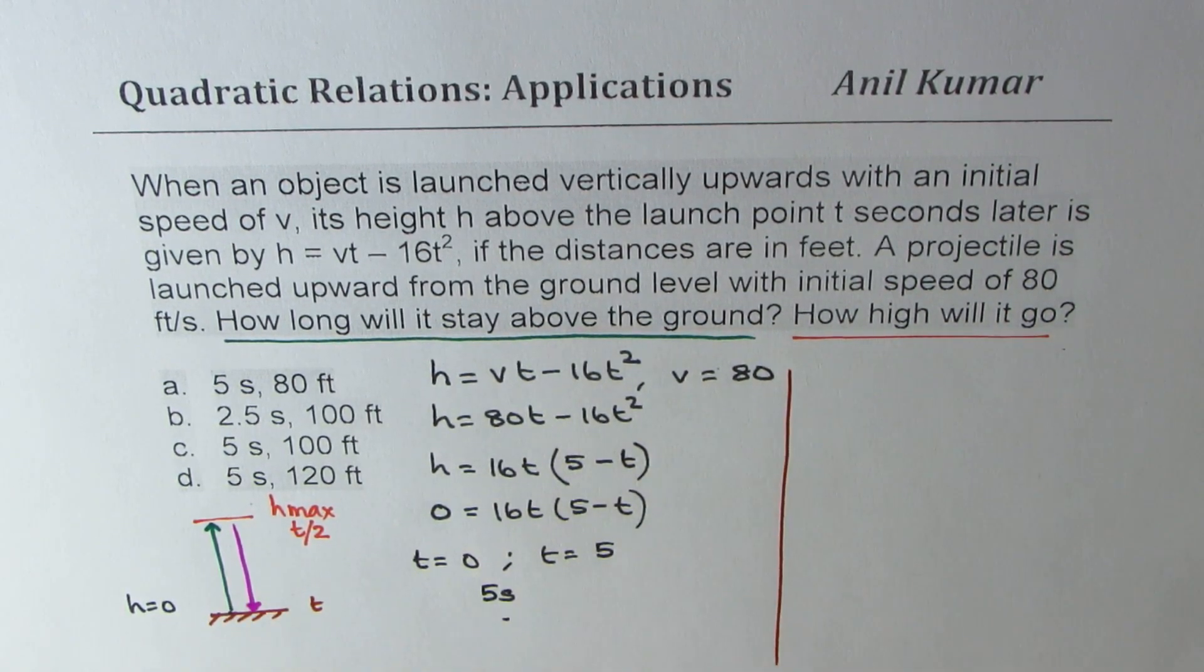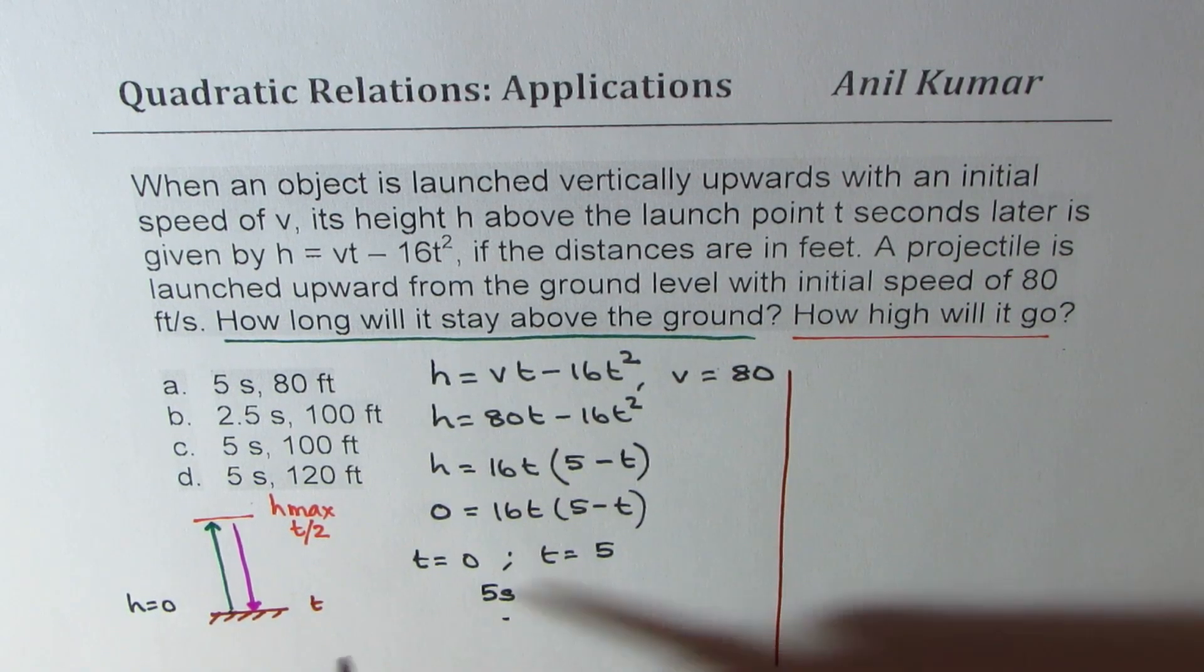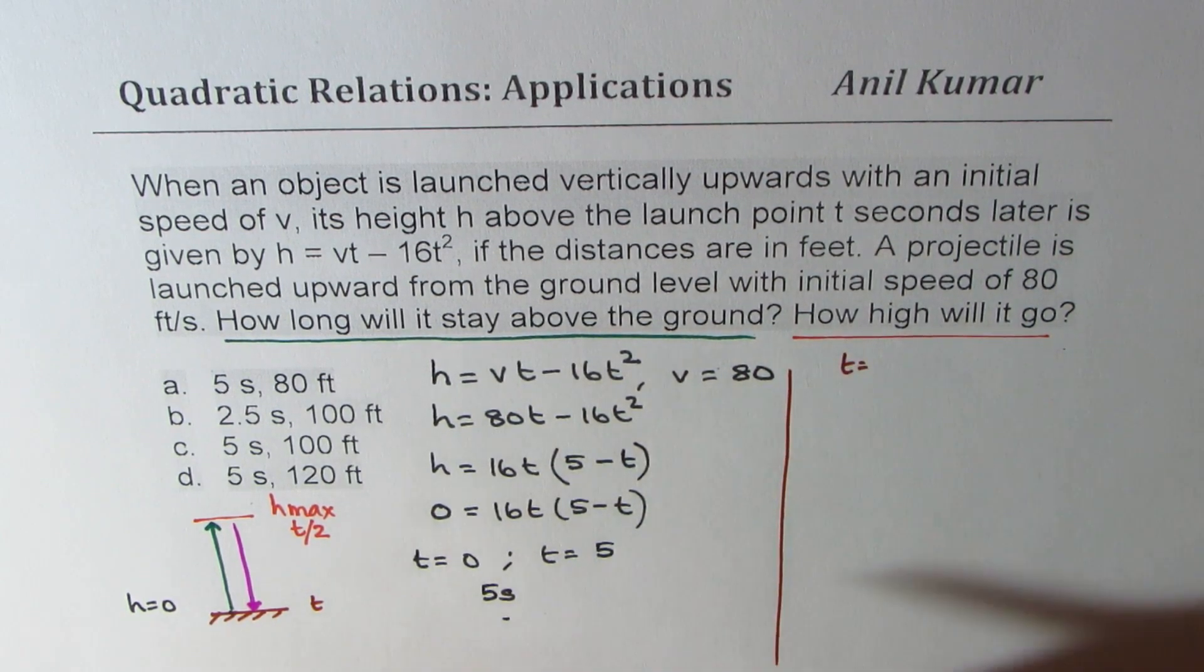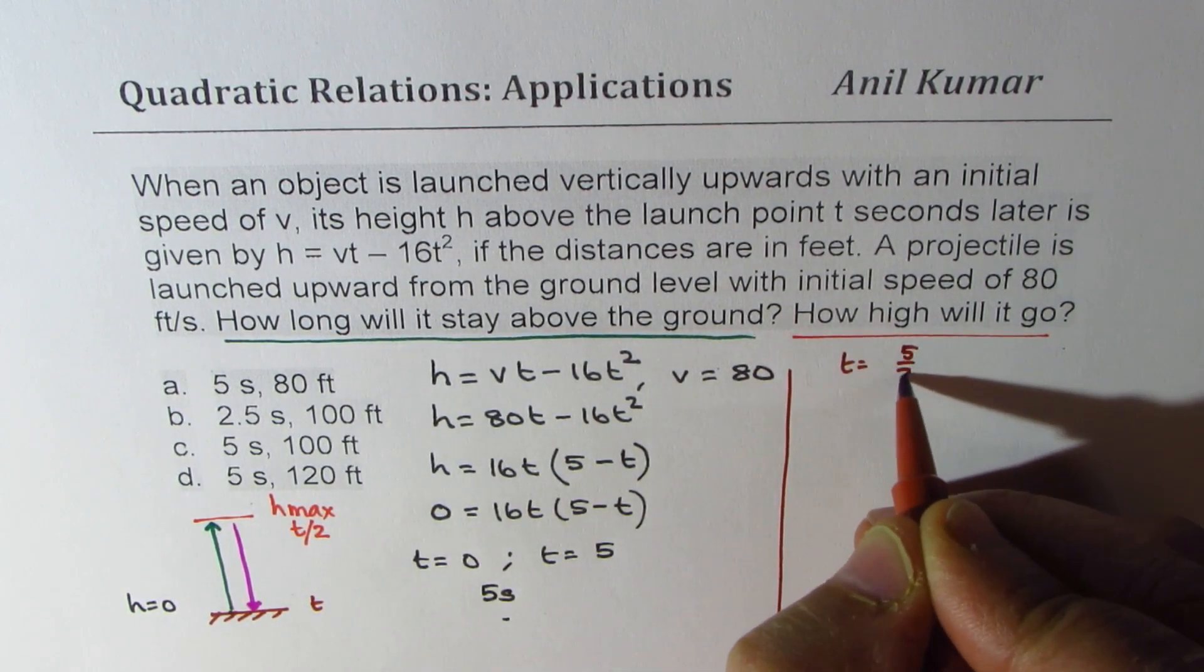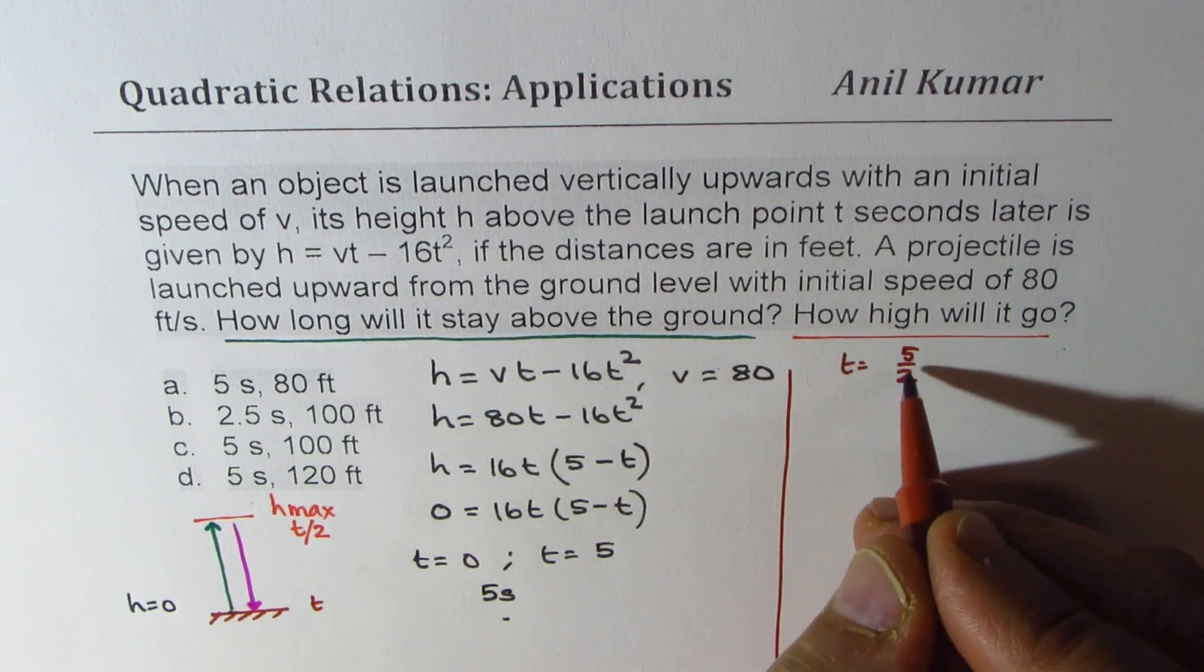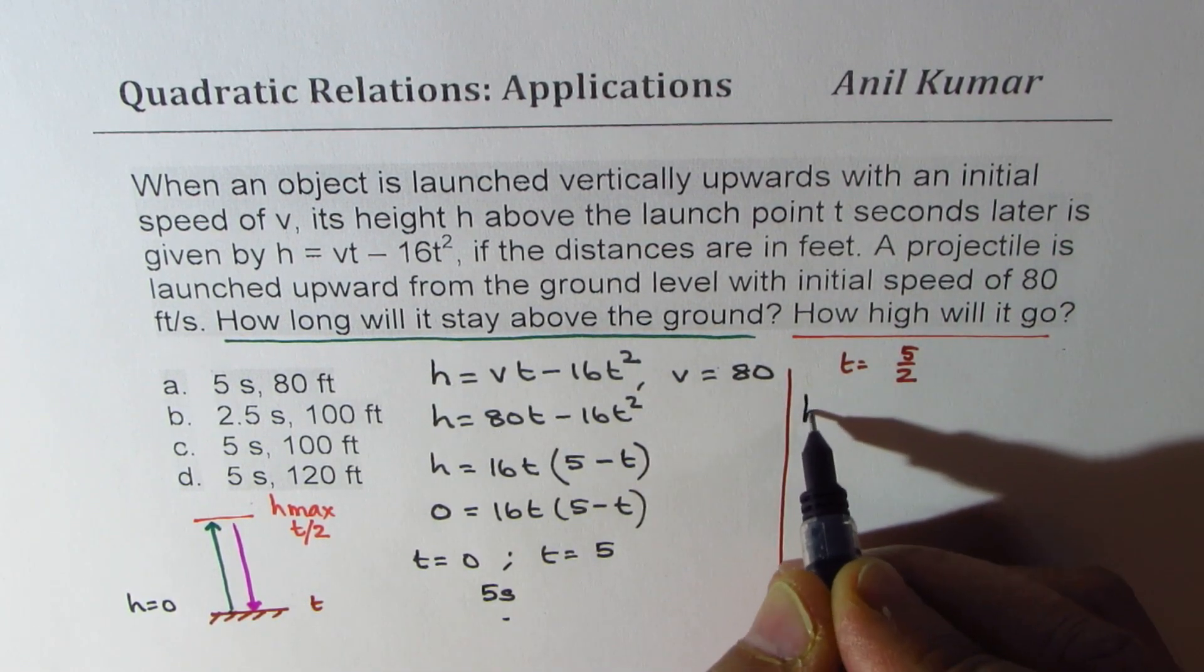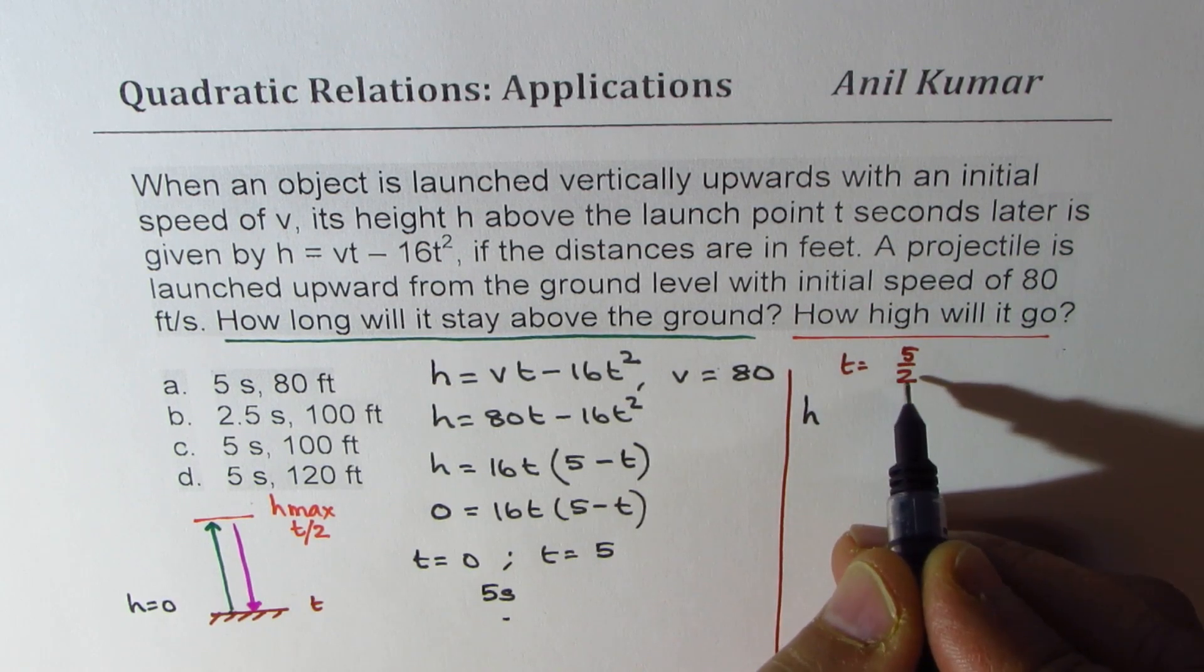Now, let's try to figure out how high will it go. We know the maximum height will be at t = half of 5, which is 5 over 2. So that is the time now. So basically, now we need to find height when t = 5/2.